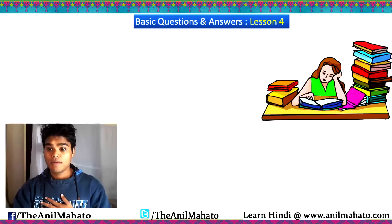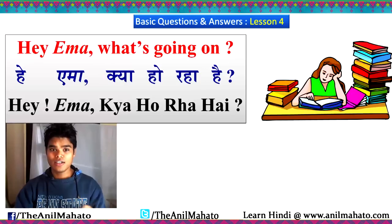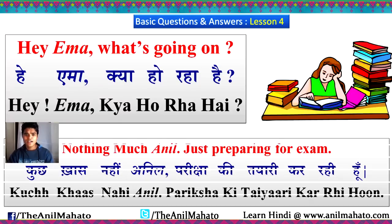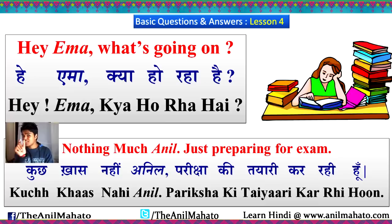Now let's look at Emma — she looks like a real bookworm. 'Hey Emma, kya ho raha hai?' Emma answers: 'Nothing much, Aneal, just preparing for the exam.' But because Emma is a girl, she says 'kar rahi hun' instead of 'kar raha hun'. So: 'Kuch khas nahi, Aneal, pariksha ki tayari kar rahi hun.' That's the only difference — rahi hun for female, raha hun for male.